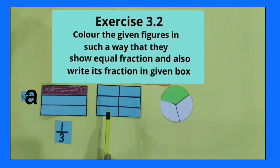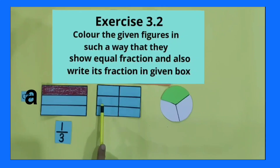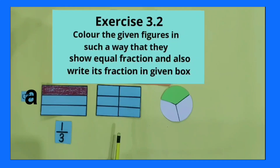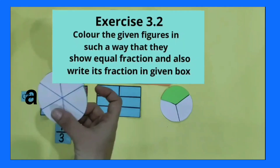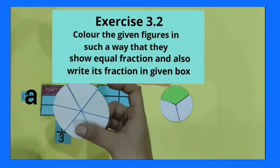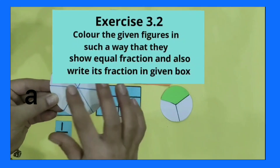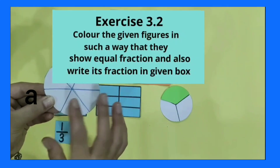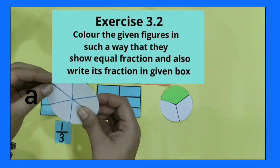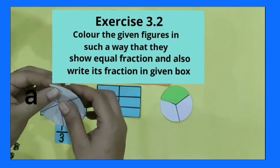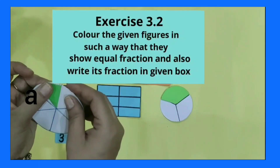Now let's start with the second shape. It is divided into six equal parts and we have to color this shape so that its fraction becomes equivalent to one by three. This is the circular shape divided into six equal parts. Now I colored one of its parts.